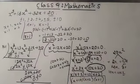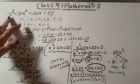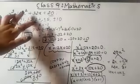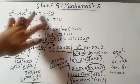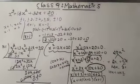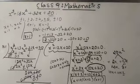So the three factors of the cubic polynomial x cubed plus 13x squared plus 32x plus 20 are x plus 1, x plus 2, and x plus 10. I hope you have understood this. If any doubts, we will discuss in a live session. Thank you, children.